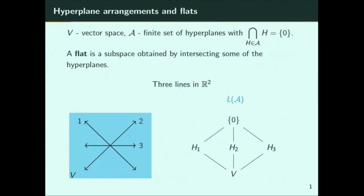I've drawn these things in a particularly nice way. I get a poset — I get a lattice. In particular, there's some order here where it's ordered by reverse inclusion. This one is bigger than that one because 0 is contained in this hyperplane, and this one's bigger because this line is contained inside of this plane. This is a ranked lattice, ranked by codimension: the codimension of the entire vector space is 0, this one's 1, and this is codimension 2.